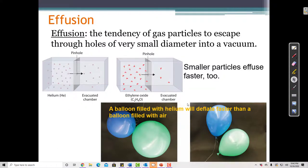Effusion is the tendency of gas particles to escape through tiny holes, sometimes called pinholes, into a vacuum. Smaller particles diffuse faster. When I remove the partition, they'll mix faster. And smaller particles with less mass will also effuse faster, which means that they will leave through this pinhole at a faster rate than particles that have a larger mass.